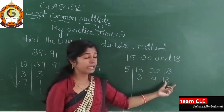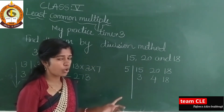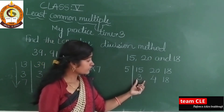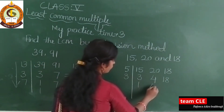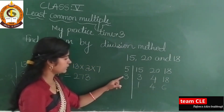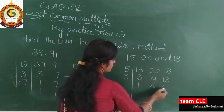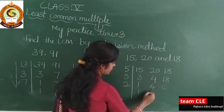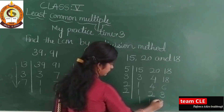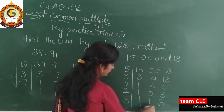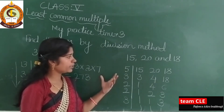Next, see here: 3, 4 and 18 are there. Check whether all 3 digits are in the same table — no. But 3 and 18 are in the same table: the 3 times table. Take here: 3 ones are 3, 4 as it is, 3 sixes are 18. Next you take here 4, 6, 1 and this 3. Then you take here 3, 1, 1 and 1. You multiply these numbers and you will get the LCM of 15, 20 and 18.